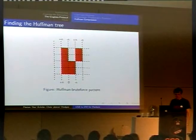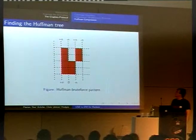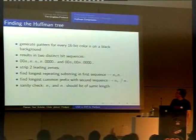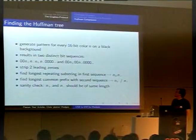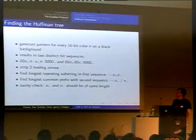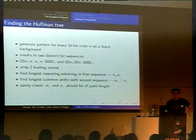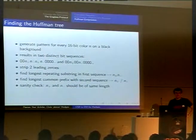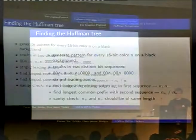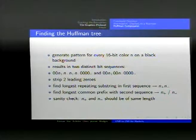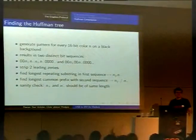And so we try, the approach is basically to generate this pattern for every color n in 16-bit on a black background, and you get two different bit sequences, as I mentioned. The one starts with 0, 0. Of course, all of them start with 0, 0, as the first pixel of every row is black.